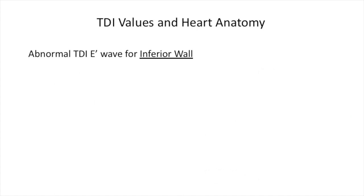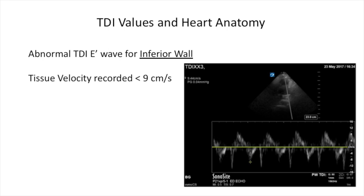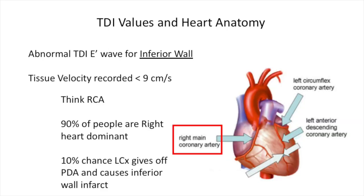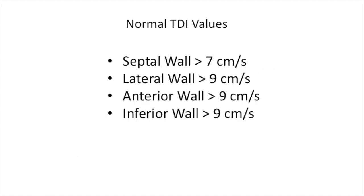And finally, if only the inferior wall of the left ventricle is showing abnormal velocity, then you would want to think about the right coronary artery being involved in the majority of cases. Most people's right coronary artery gives rise to the posterior descending artery that supplies the inferior wall. However, a few patients will instead have their left circumflex artery giving rise to it. This is a quick overview of what typically are considered normal mitral annular velocities of each left ventricular wall on tissue Doppler imaging.